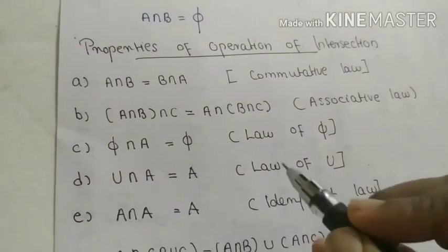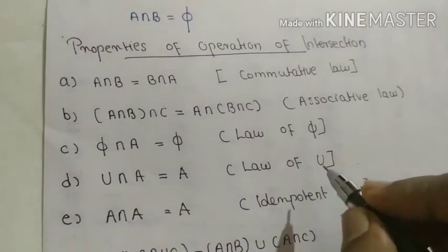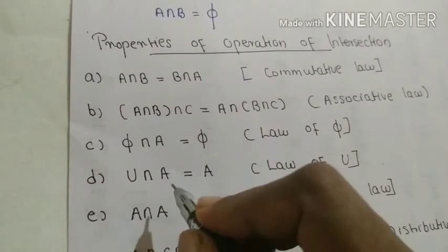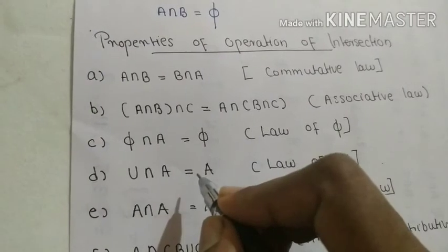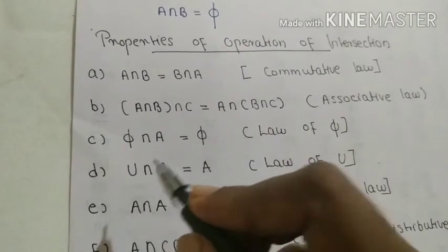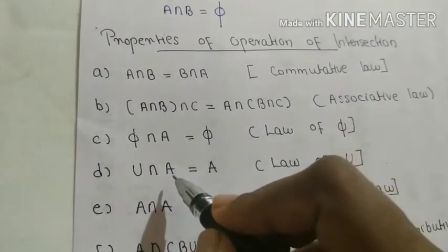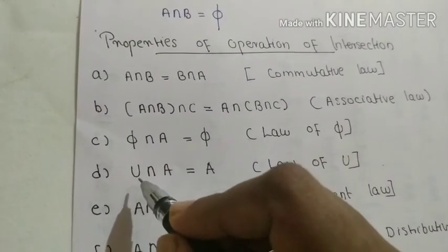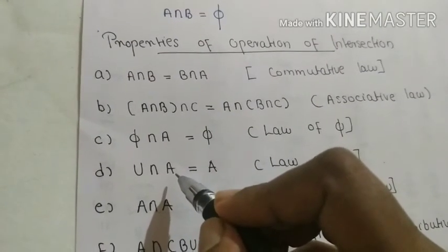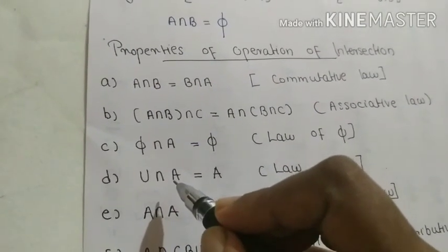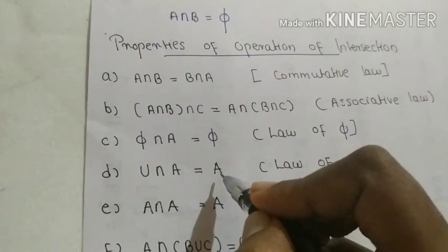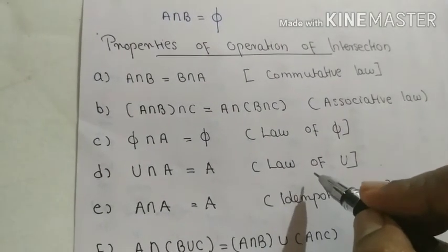The next law is the law of universal set: U intersection A is equal to A. The universal set is a big set which always contains the elements of set A, so the elements common in both the universal set and set A are simply the elements of A.